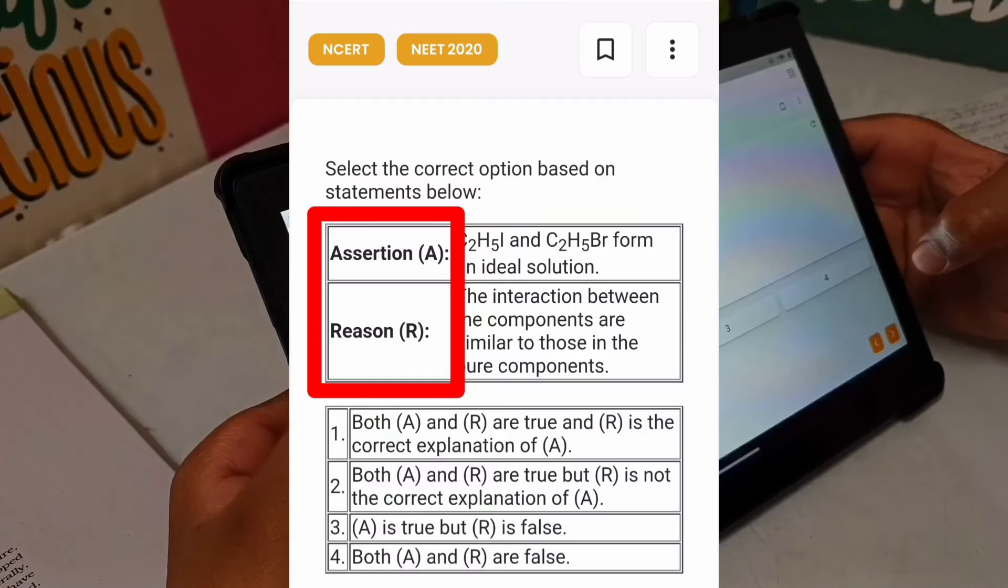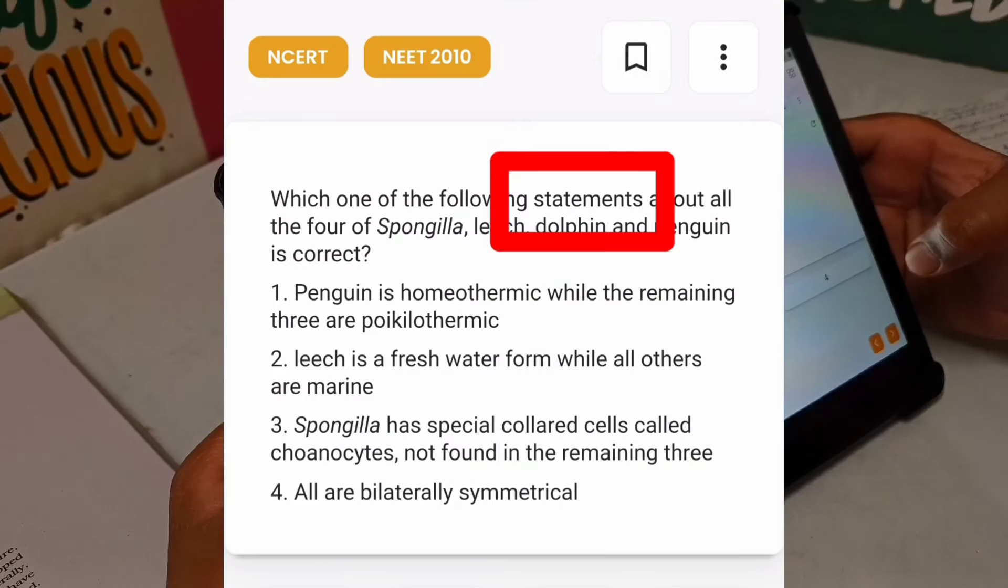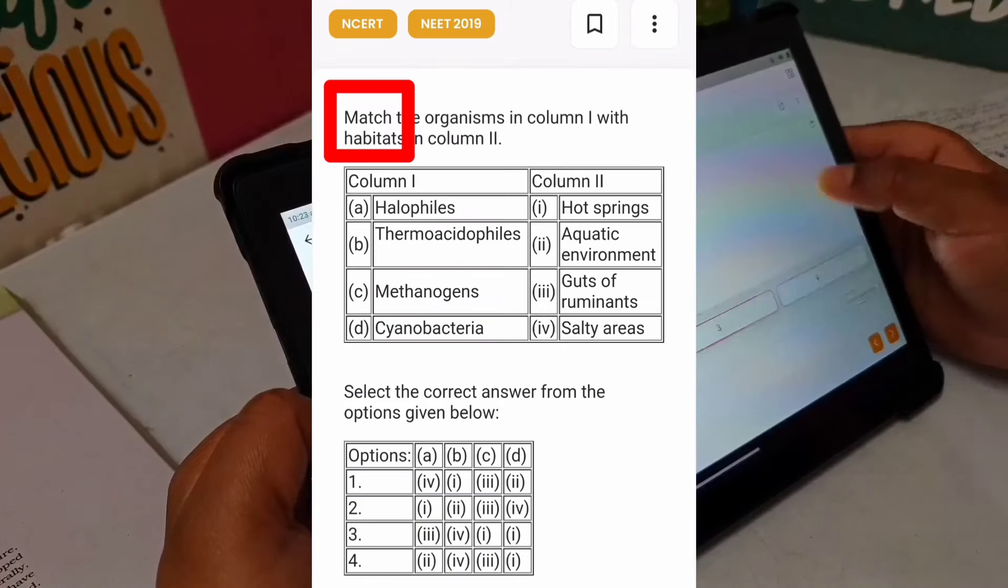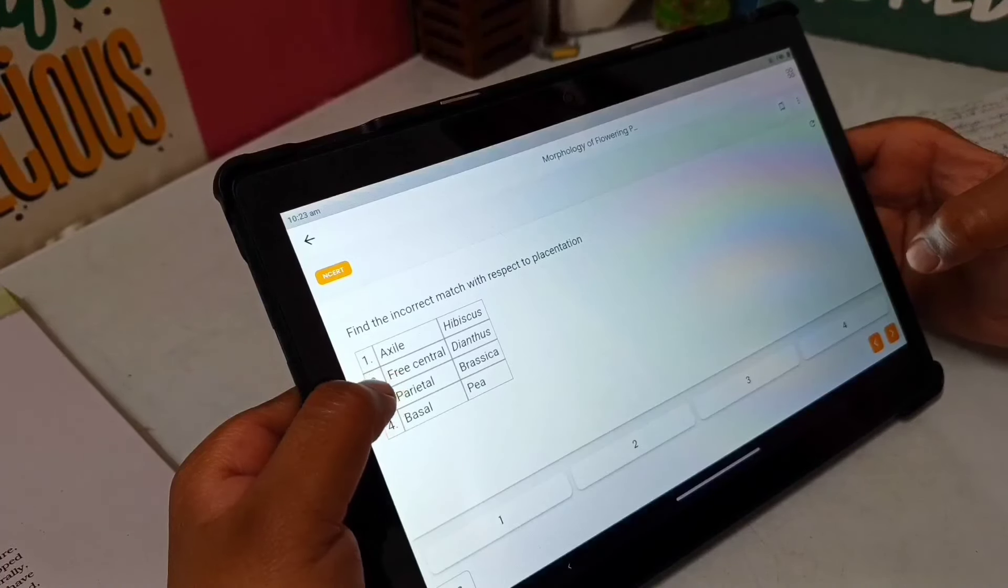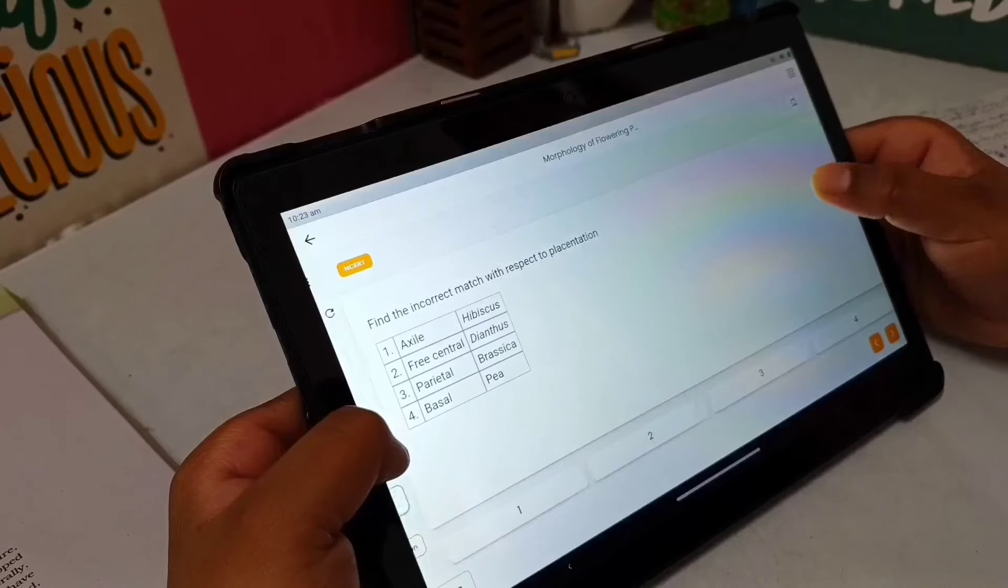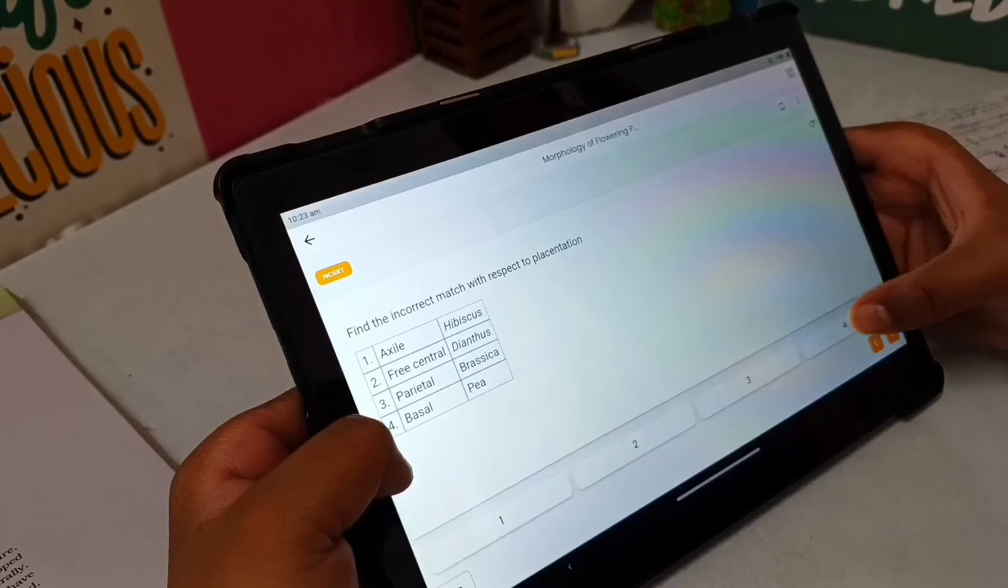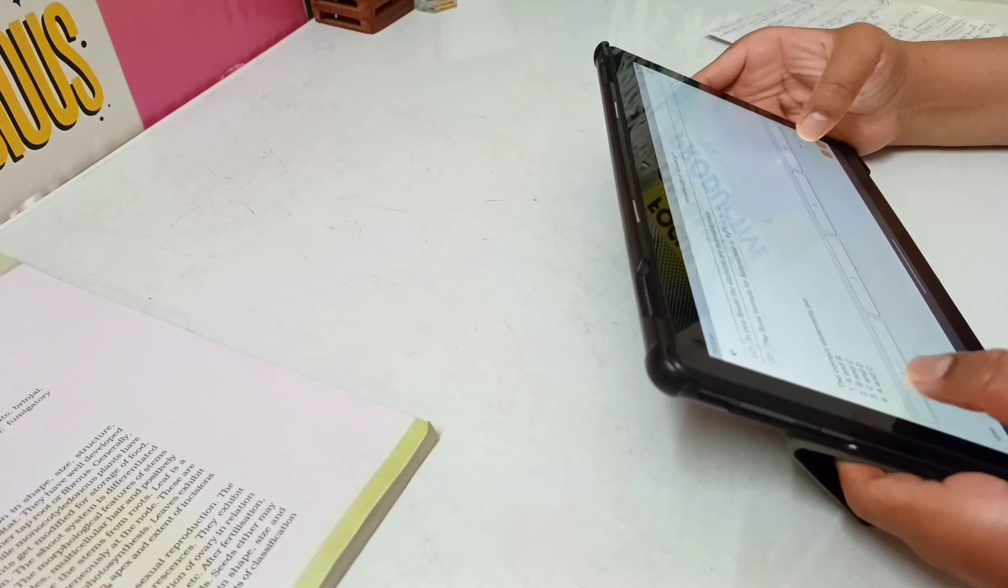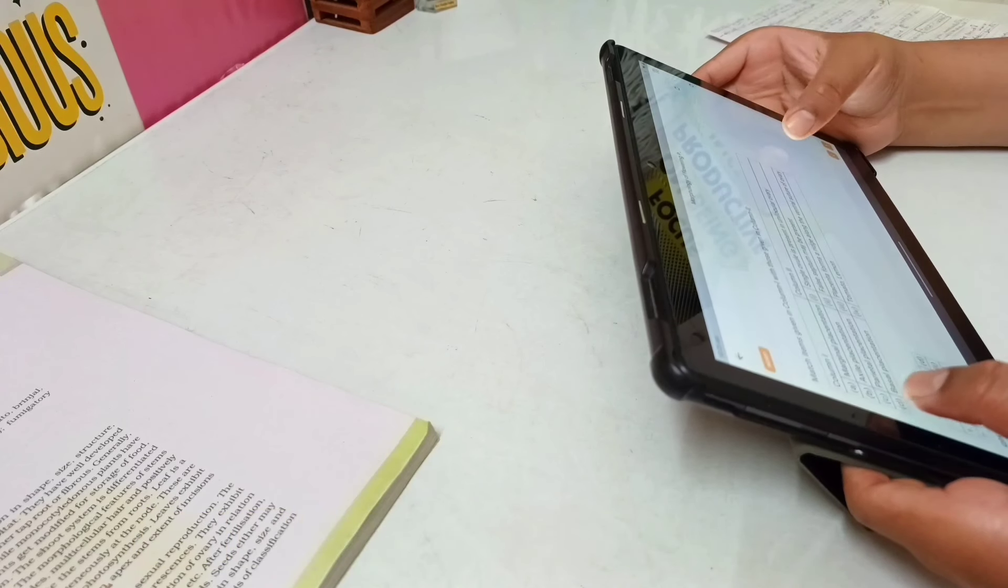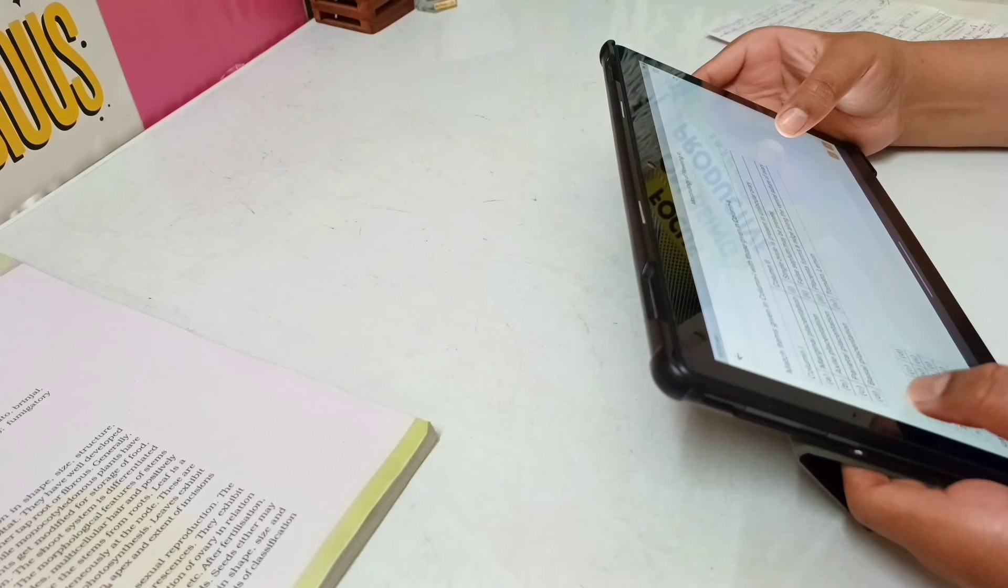So now you can practice Assertion Reasoning Questions, Statement-based Questions, Sequencing Questions, Match the Following Questions and Graph-based Questions. These 5 types of questions are their one-stop solution. I will give this link in the description box. You can download the NEET Essential app quickly and start the practice of new types of questions.